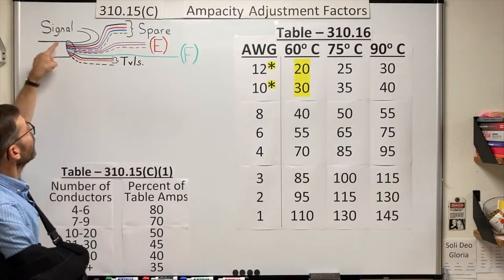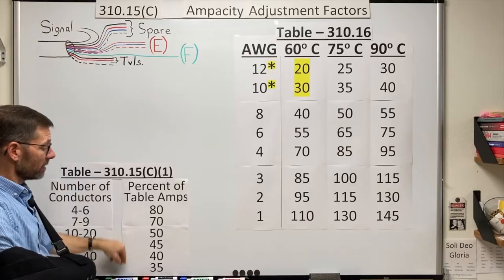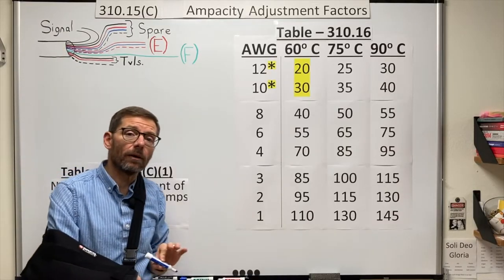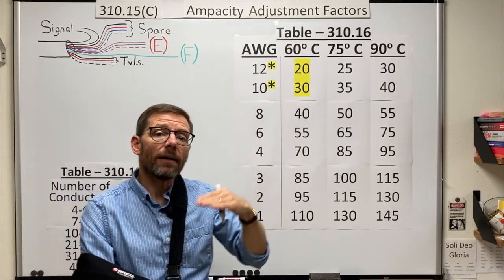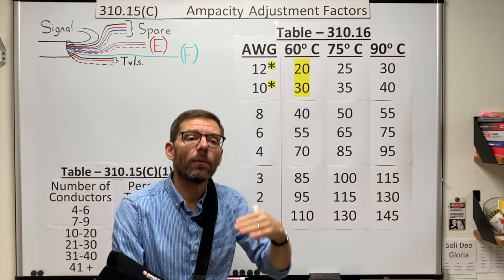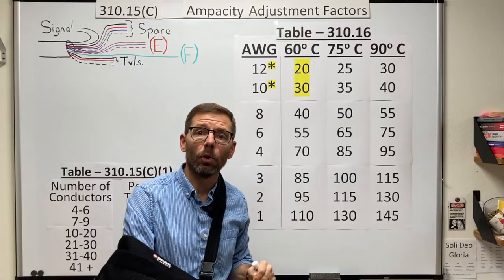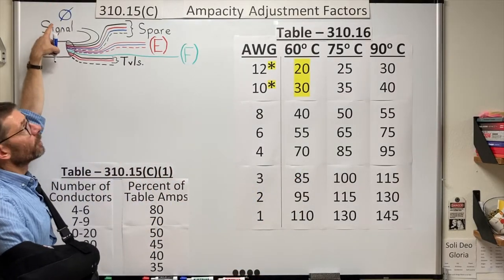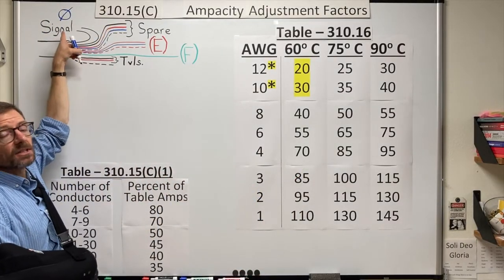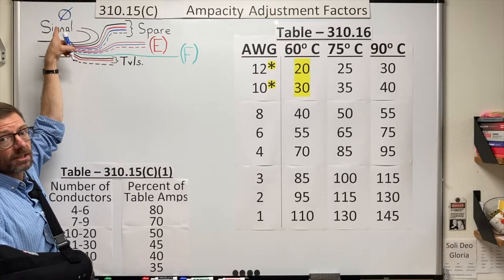In my diagram, I drew some signal conductors. They would not need to be counted because they don't have an appreciable current. They wouldn't be adding heat. They're just sending a signal back and forward or maybe some small controls. So for this calculation, the signal or control wires would not count.